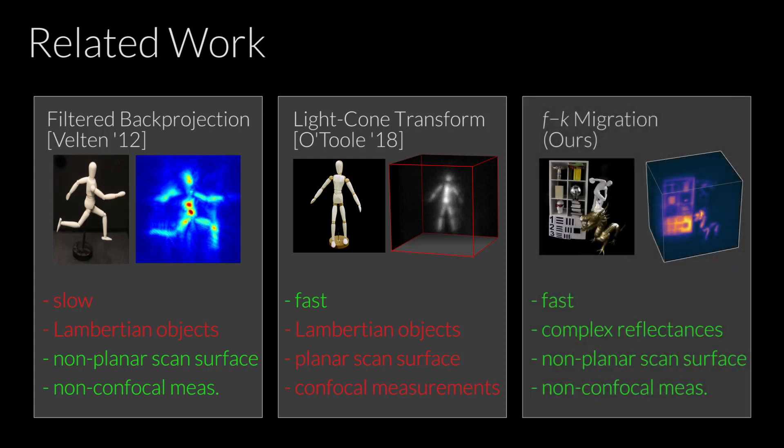We present a fast, wave-based image formation model for non-line-of-sight imaging called FK migration. Inspired by inverse methods used in seismology, this frequency domain approach generalizes to reflective or specular surfaces and improves upon other approaches.